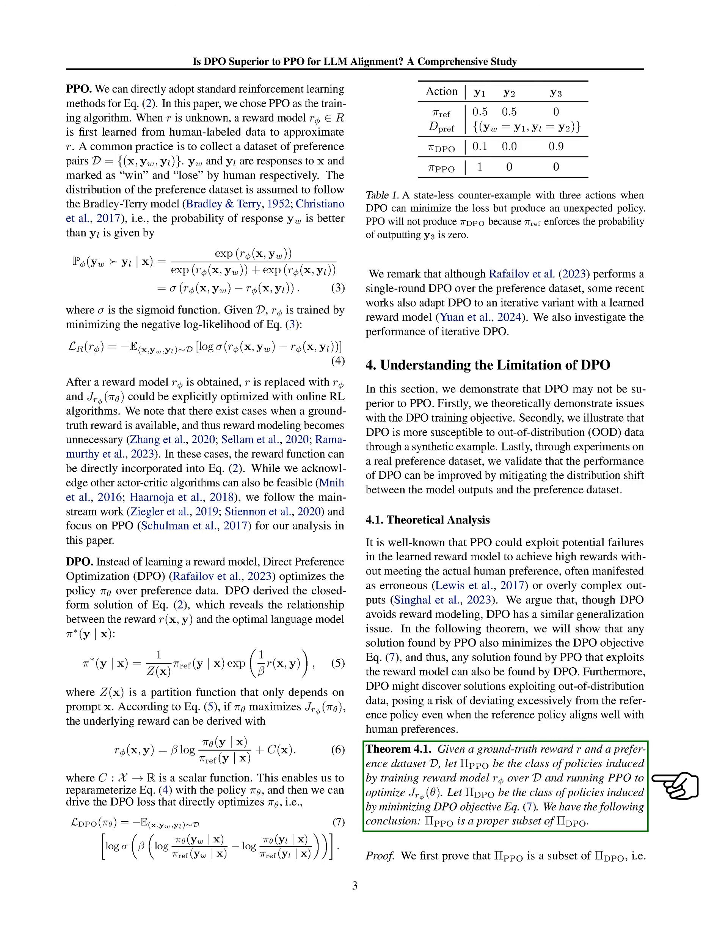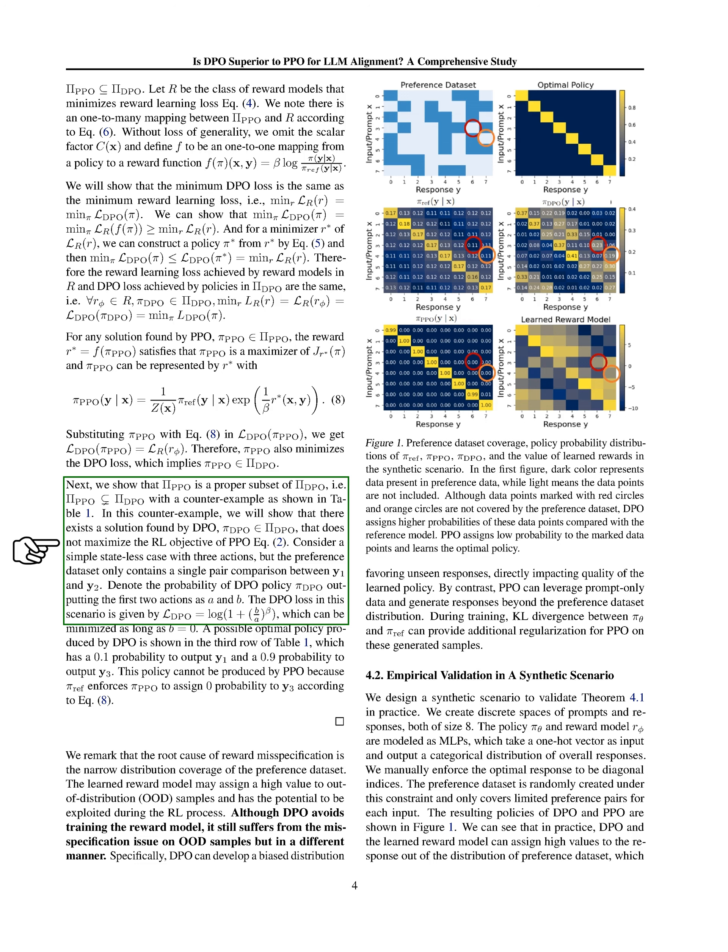We will provide a proof showing that the minimum DPO loss is equivalent to the minimum reward learning loss. Furthermore, we will show that any solution found by PPO also minimizes the DPO loss. We will then present a counterexample to show that there are solutions found by DPO that do not maximize the RL objective of PPO.